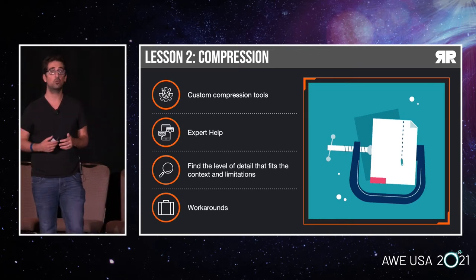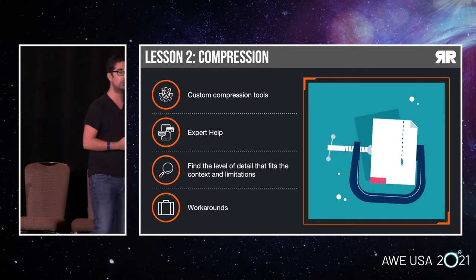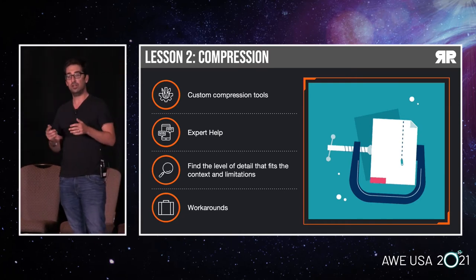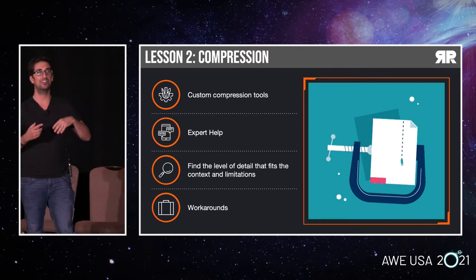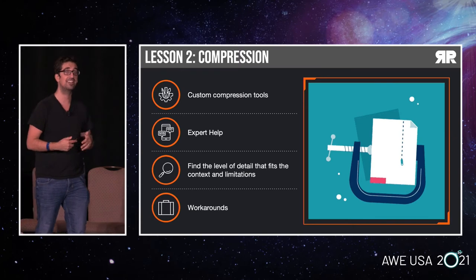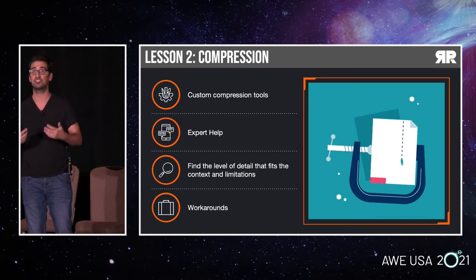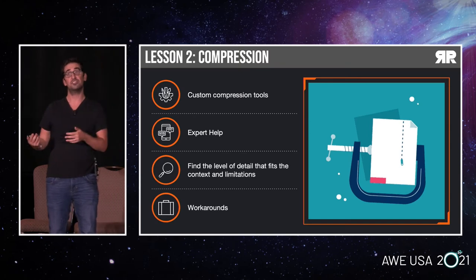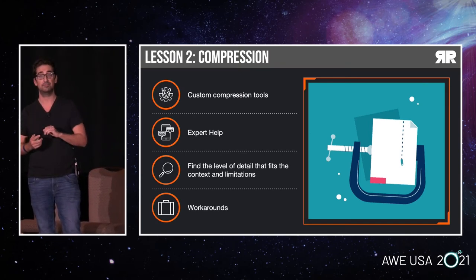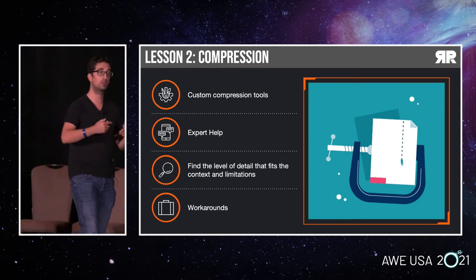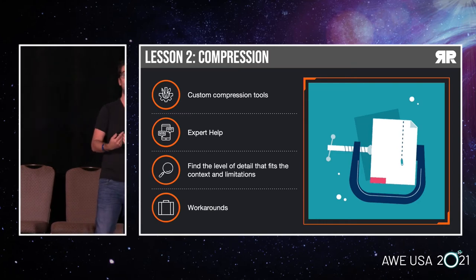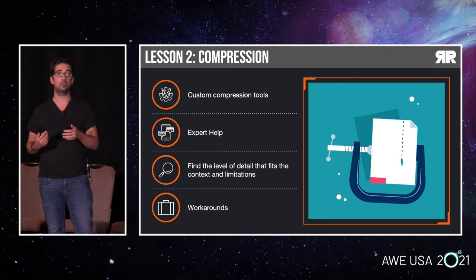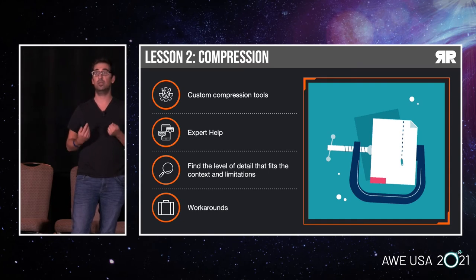Lesson two: compression and optimization. One of the restrictions of WebAR is file size and downloading assets, so you want to do everything you possibly can to reduce that file size. Unlike an MP4 or a JPEG where you can quickly find an online compression tool, that doesn't work well for an HCAP file, which is the file we received from Microsoft Mixed Reality Capture Studio. You need to work with specific software — we used Arturis, which really helped us reduce that file size. You also want to communicate your restrictions and limitations to whoever is doing the volumetric capture for you.